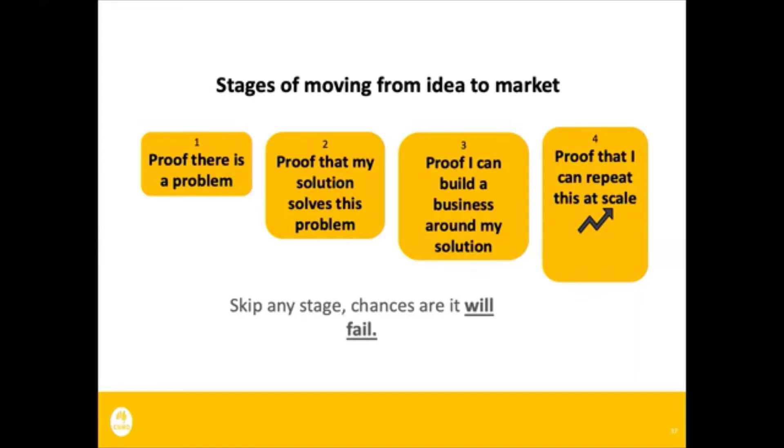The stages are: proof there's a problem, proof my solution solved this problem, proof I can build a business around my solution, and proof I can repeat this at scale. If you skip any of those stages, chances are you'll fail. I read a post from an Australian company that failed twice launching a new range of sausage products. They launched with Woolworths Coles six months ago and it failed. They changed packaging and flavors, launched again, and failed again. The idea is not just launching at scale. It's working out: is this problem understood, does this solution solve it, is there a sustainable business model, and can I do this at scale?